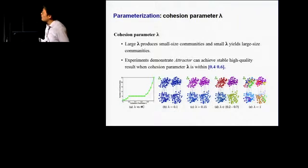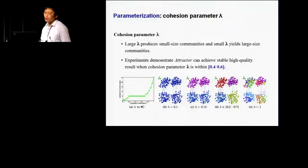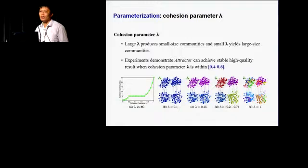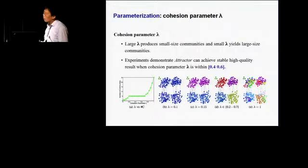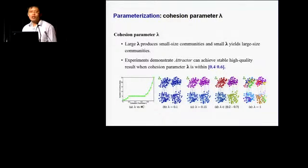We also discuss parameter setting. In this model, we introduce lambda to control whether exclusive neighbors have negative or positive effects. Larger lambda produces smaller-sized communities, while smaller lambda produces larger-sized communities. Through many experiments, we find that this parameter is quite robust to community detection results in the range from 0.4 to 0.6. Also, from different parameter values, attractors may allow for hierarchical analysis.